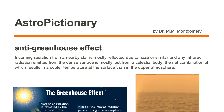An anti-greenhouse effect is when incoming radiation from a nearby star is mostly reflected due to haze or similar, and any infrared radiation emitted from the dense surface is mostly lost from a celestial body. The net combination of which results in a cooler temperature at the surface than in the upper atmosphere.